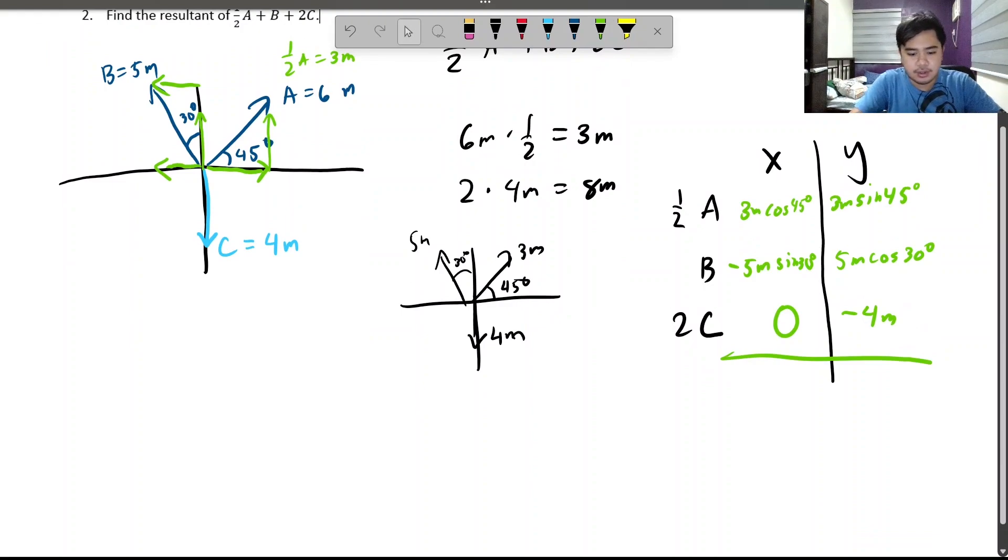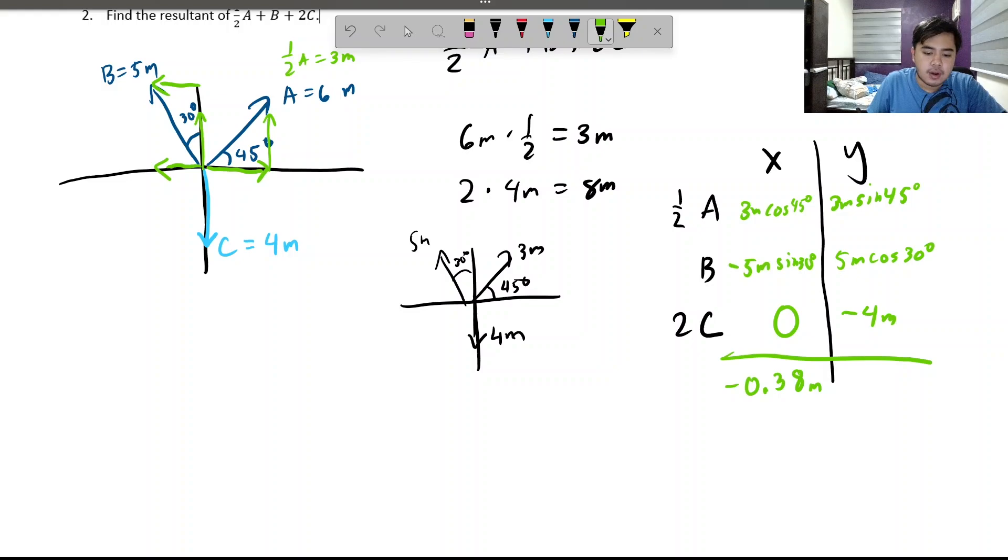And then, we just have to add this. I'll use it on the calculator. You can use yours. For the X, the answer is around negative 0.38 meters. Save that. And for Y, it is around 2.45 meters.